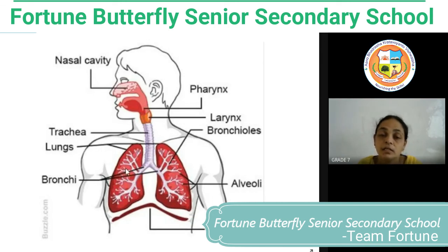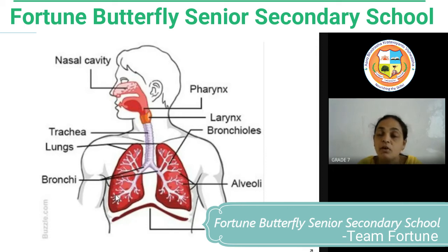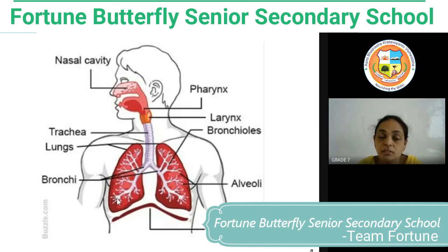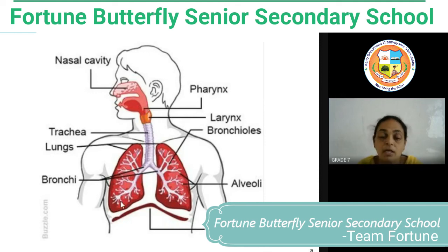All these branches penetrate into the lungs, and at the end of these bronchi we have bronchioles, which open into sac-like structures called alveoli. The alveoli are sac-like structures covered with capillaries, and this is actually the site of gas exchange.